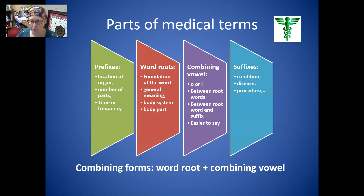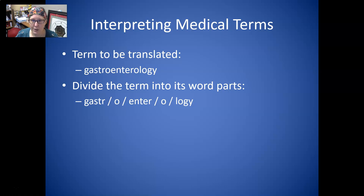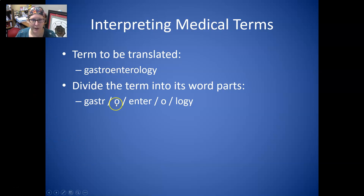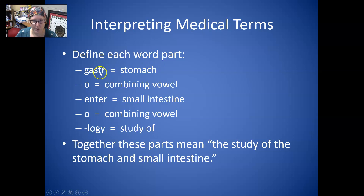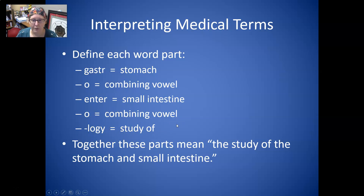The combining forms are always the word root plus the combining vowel. If you have a medical term to translate, like gastroenterology, you want to divide it into its word parts. Since the O's are combining vowels, you can see where the word breaks up: gastr/o/enter/o/logy. Gastro means stomach, O is the combining vowel, enter means small intestine, O is the combining vowel, and logy means the study of. Altogether, this means the study of the stomach and small intestine.